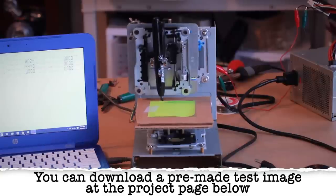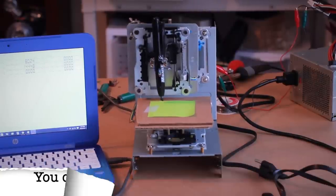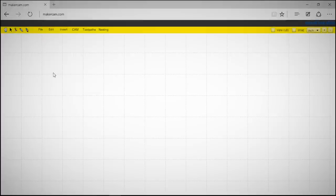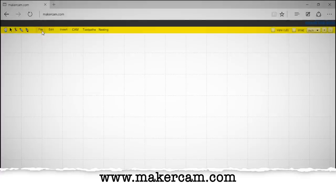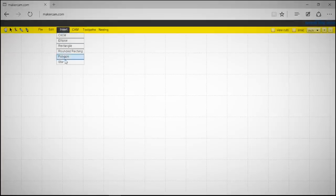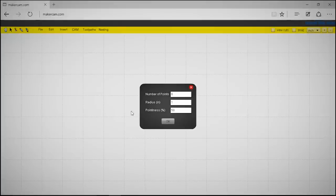Since the Gerbil Controller only reads G-code, we need a way to convert images to G-code. A great website for this is MakerCam.com. Here you can add basic images or even upload your own. To create a new image, go to insert and select a shape.